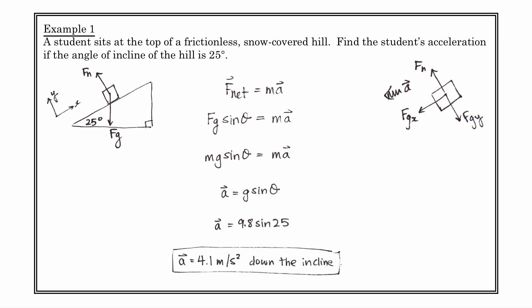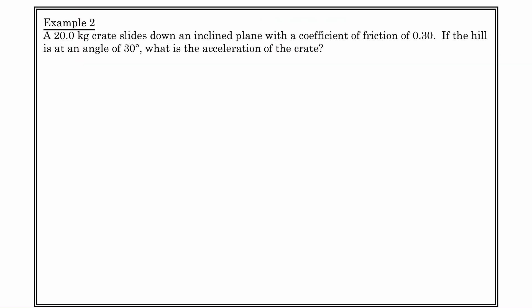The acceleration of the student is 4.1 meters per second squared down the incline. Now try this on your own: what is the value of the normal force? The normal force equals the y component of gravity. If you're curious, it works out to mg cos θ — try it and figure out the numerical value of the normal force.